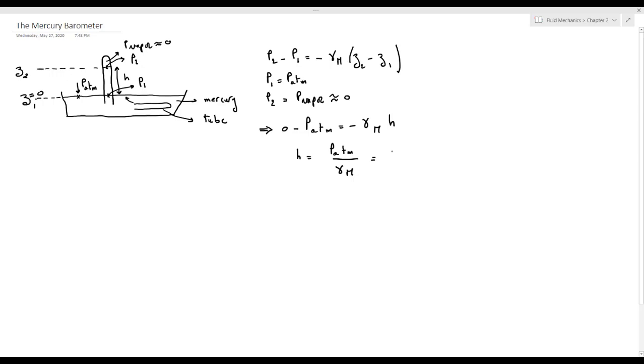The atmospheric pressure at sea level will be equal to 101,350 Pascal over gamma mercury. We can take gamma mercury as 133,100 newton per meter cubed, so we'll obtain a level H equal to 0.761 meters, equivalent to 761 millimeters.